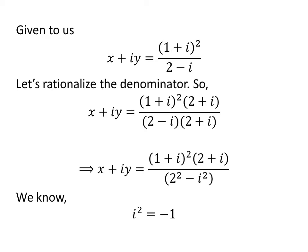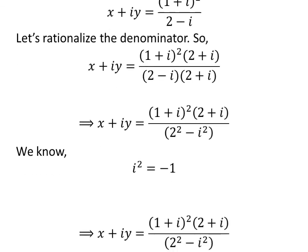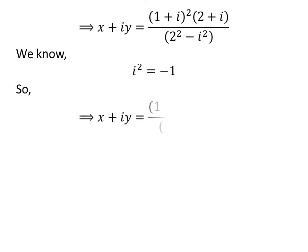We know the square of the imaginary unit i is equal to minus 1. Applying this property gives us x plus i times y is equal to the square of (1 plus i) times (2 plus i) upon 4 minus of minus 1.